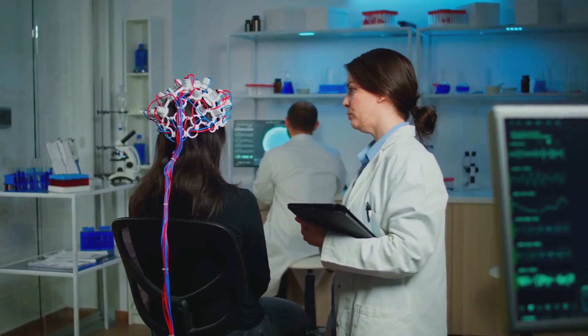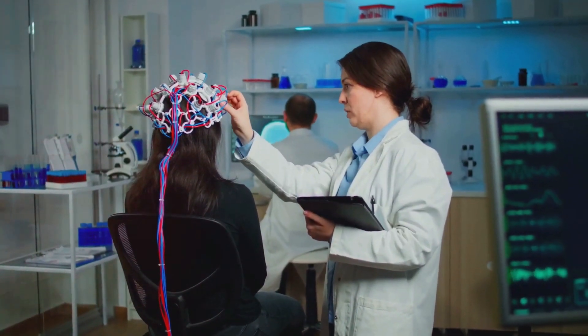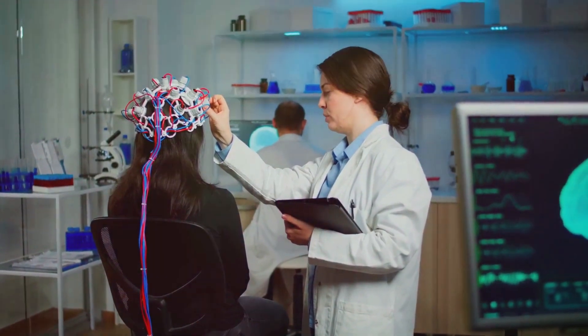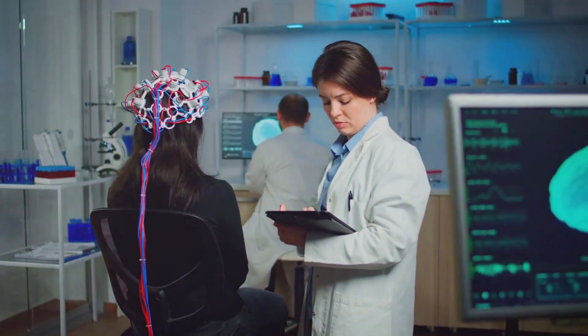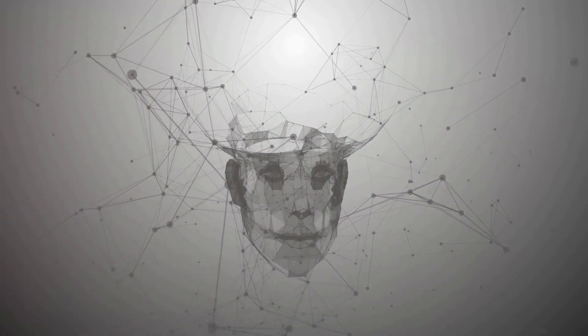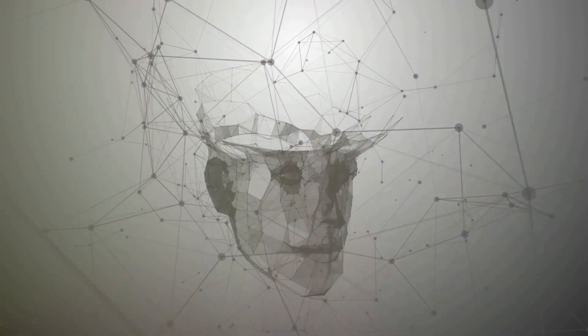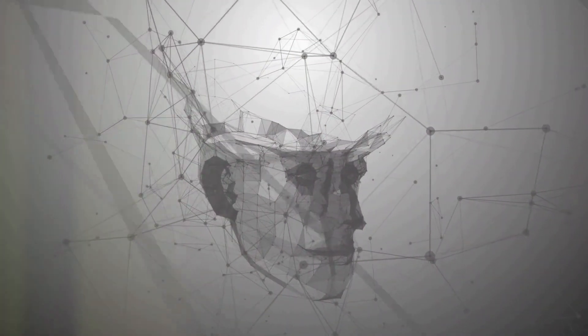But how exactly are these threads implanted? Neuralink has developed a surgical robot specifically designed to perform this delicate task. The robot is capable of inserting six threads per minute, each thread being about one-fourth the diameter of a human hair. This precision is crucial to avoid damaging the brain during the procedure.